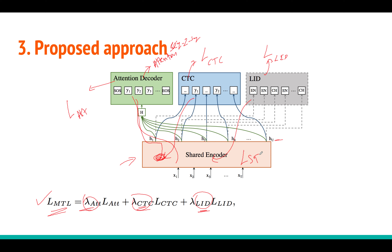Each decoder head contributes differently: the attention decoder generally gives better performance but struggles in noisy environments and with long audio. The CTC loss provides a prior alignment via dynamic programming that boosts the attention model. The LID task acts as an auxiliary task, encouraging the encoder to learn language-discriminative features that improve overall recognition performance.